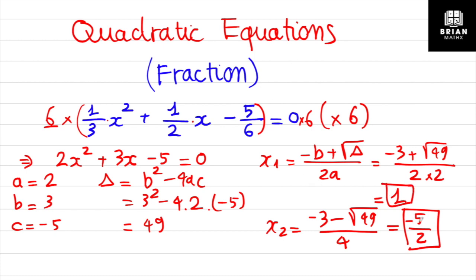So x₁ = 1 and x₂ = negative 5/2. The first step when solving a quadratic equation with fractional coefficients is to cancel the fractional form. That's all — very easy! I hope you can understand and apply this to your test.